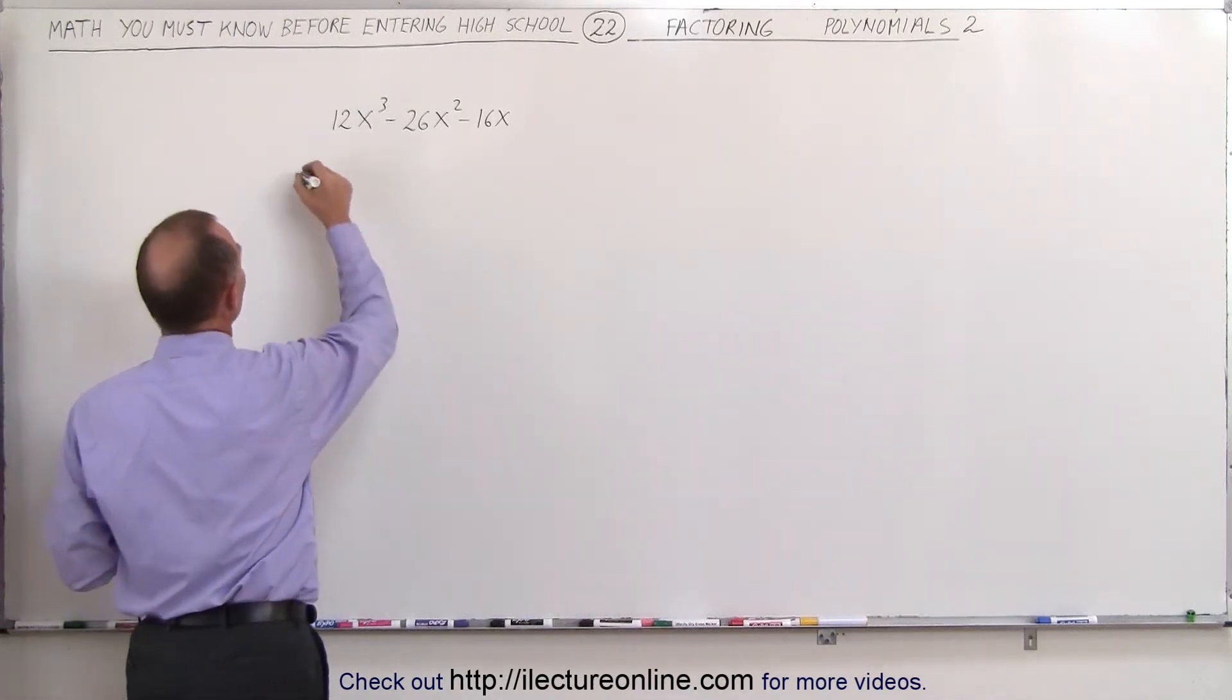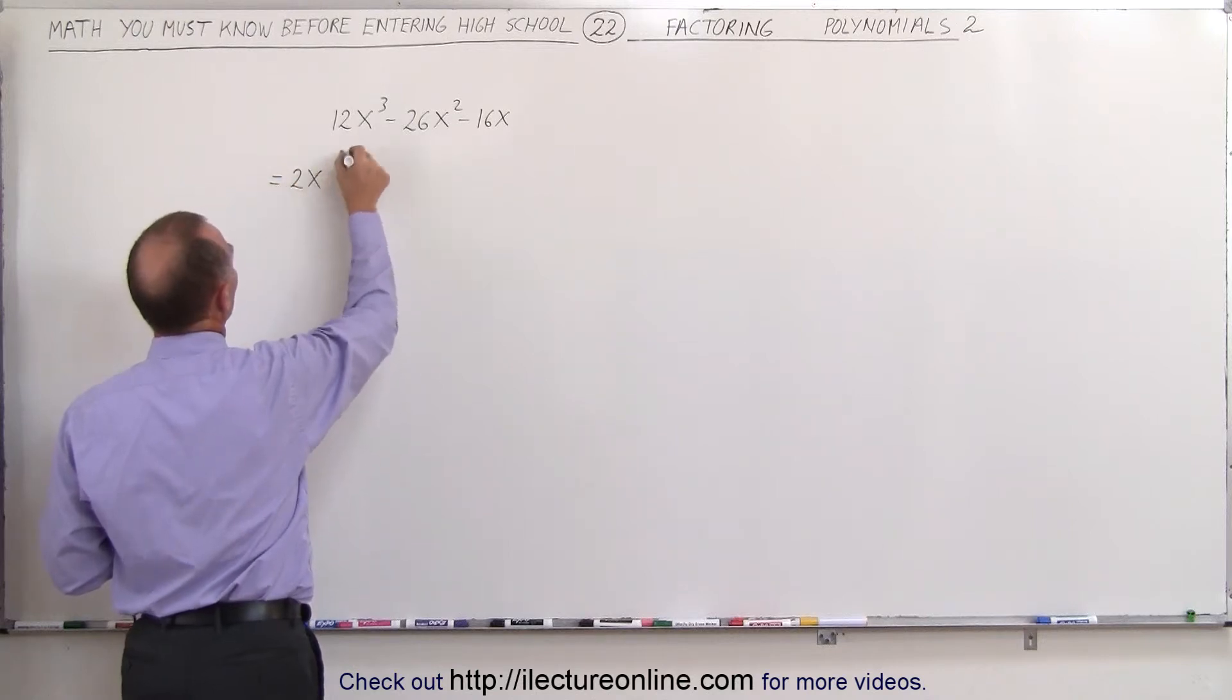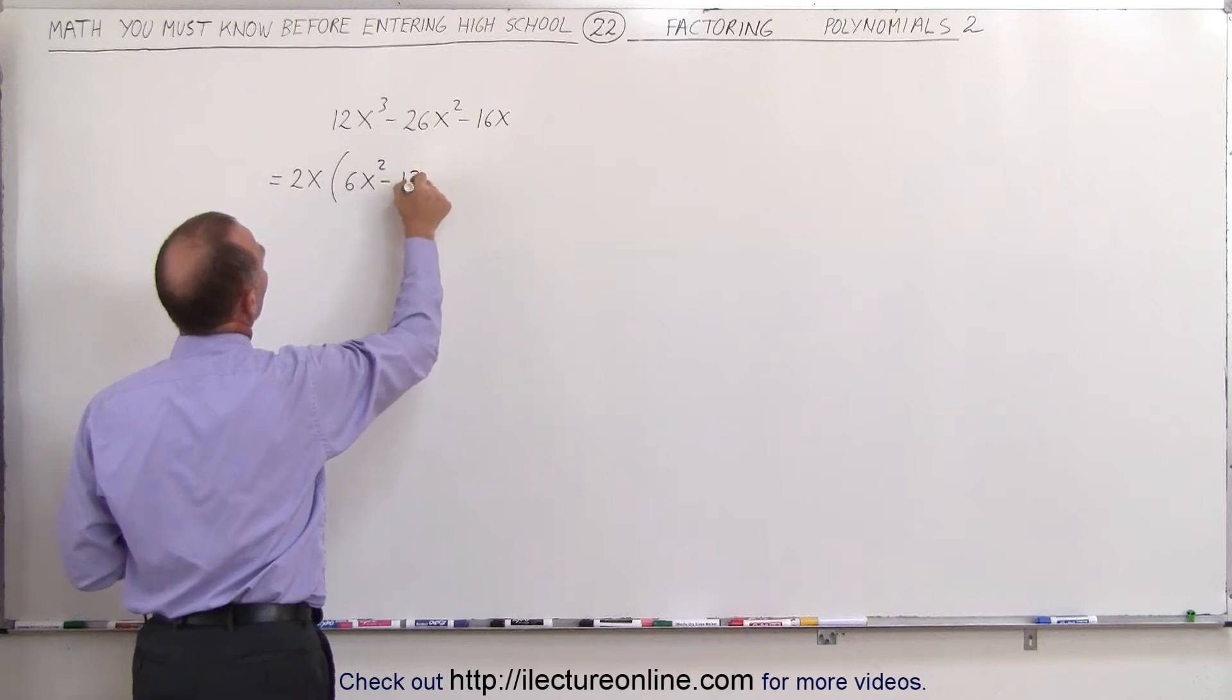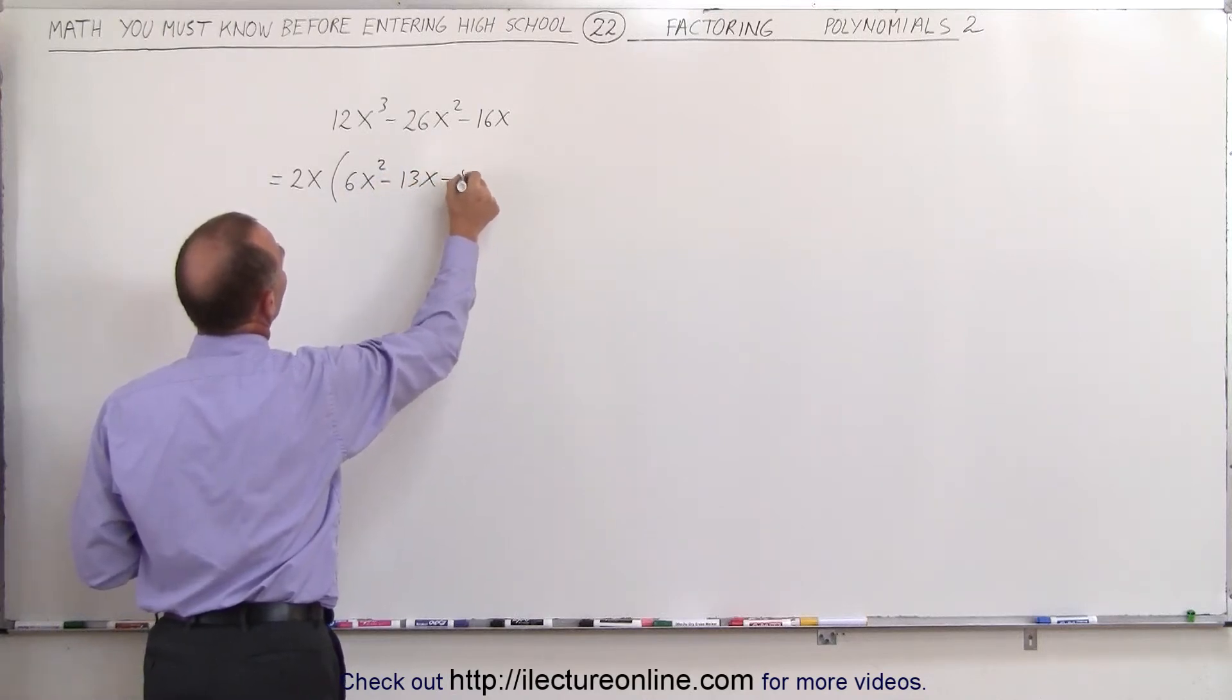So when we do that, we factor out a 2x, then we're left with 6x squared minus 13x minus 8.